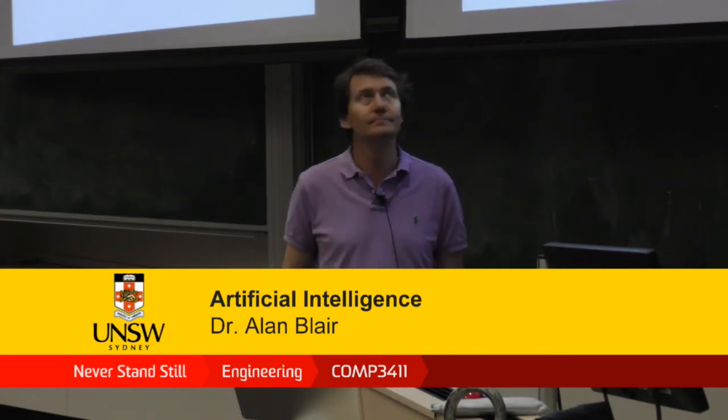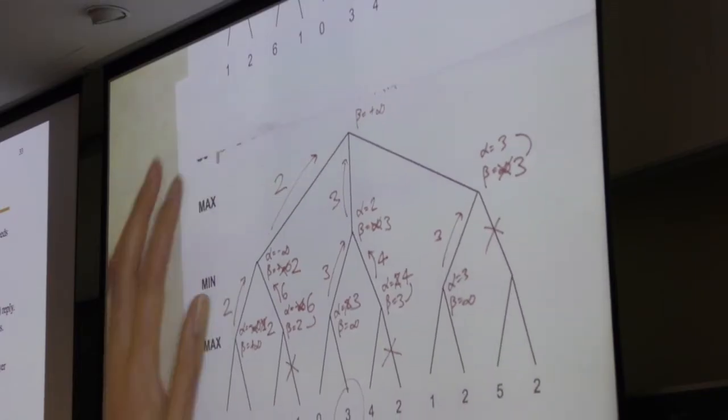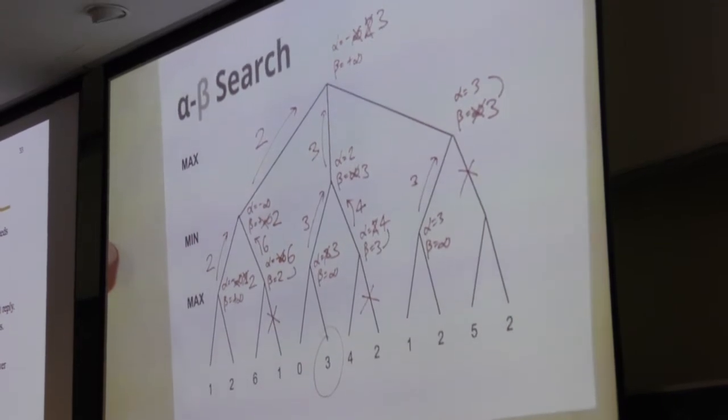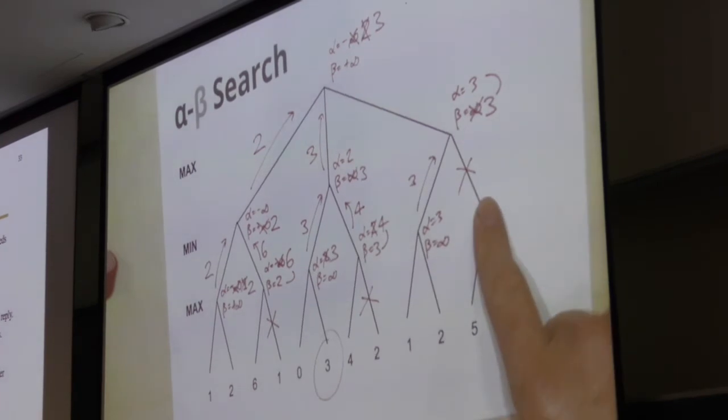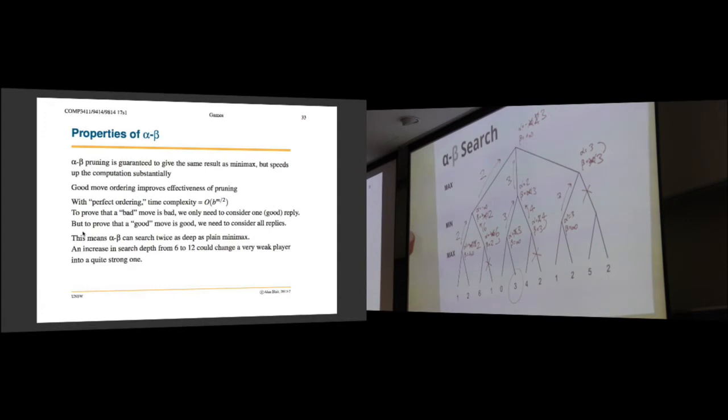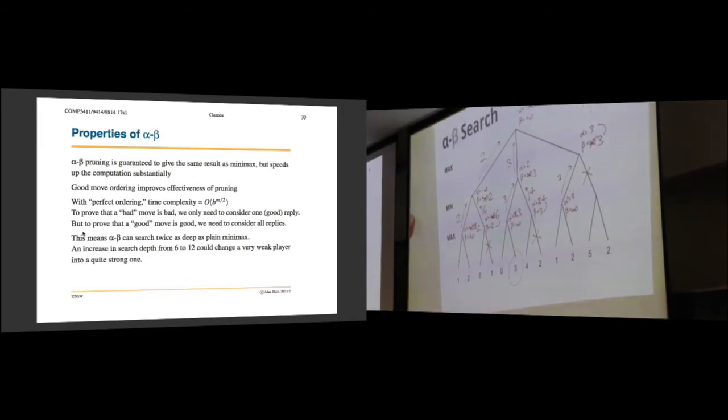So I said that alpha-beta speeds up the search. This alpha-beta pruning is guaranteed to give exactly the same result and find the optimal move, but it does it faster because it prunes off some of the branches. So it's often helpful to do minimax search first and then do alpha-beta pruning, just to make sure you get back the same answer. For a small tree like this you don't really see the speedup particularly, but for a larger tree the speedup becomes enormous.